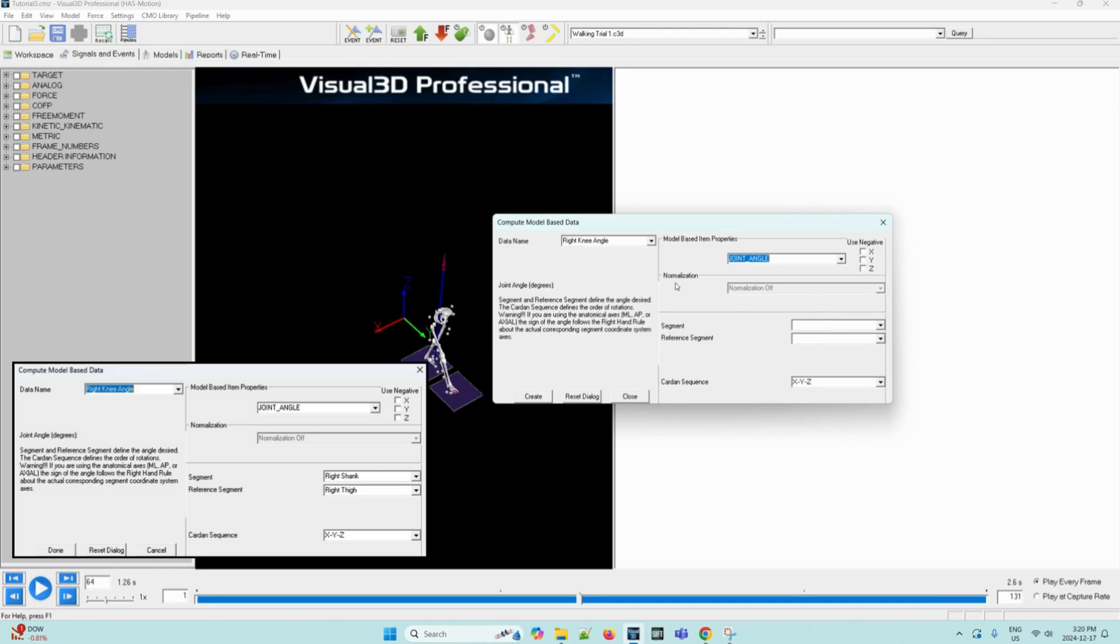As we can see, the default normalization is off. And then the segment will be the right shank. So we can select it from the drop down, right shank. And the reference segment will be the right thigh. This will also be at the drop down. And we can select right thigh. The Cardan sequence XYZ is automatically selected for us. And this is the equivalent of the joint coordinate system. Now we can press the Create button.